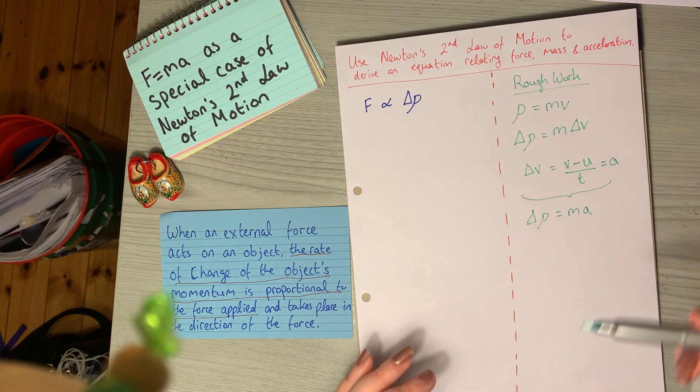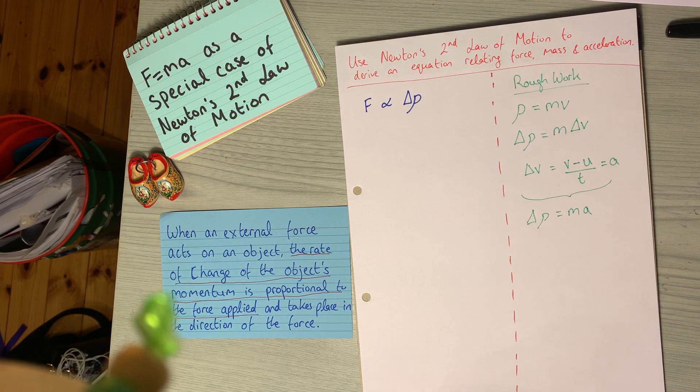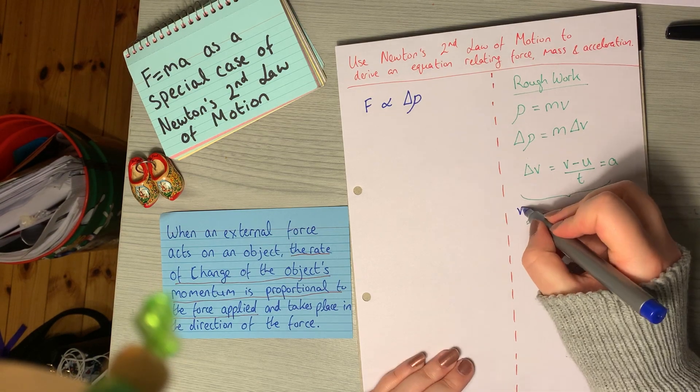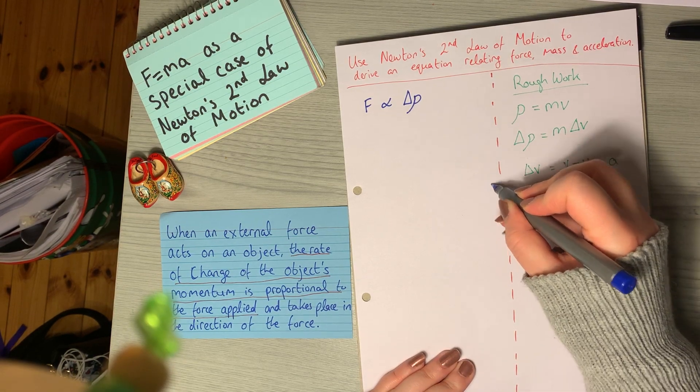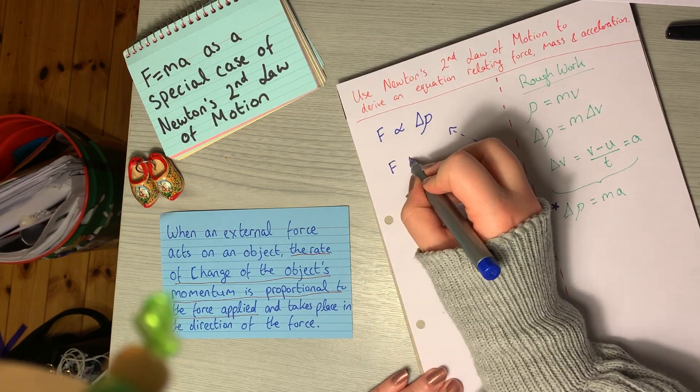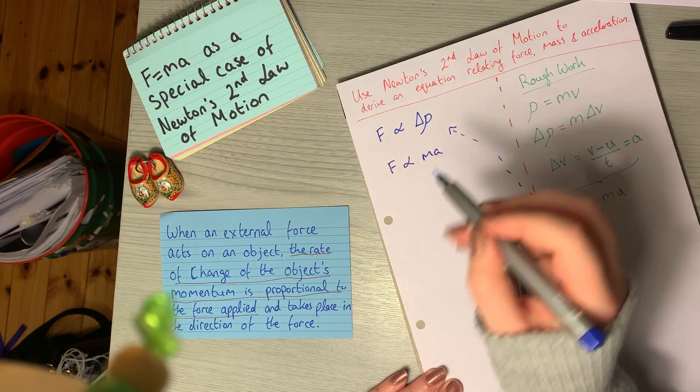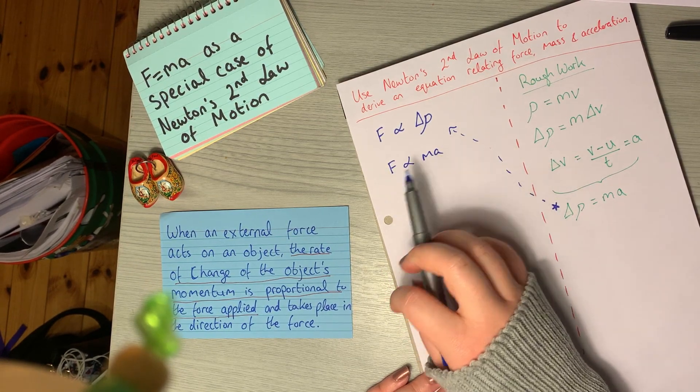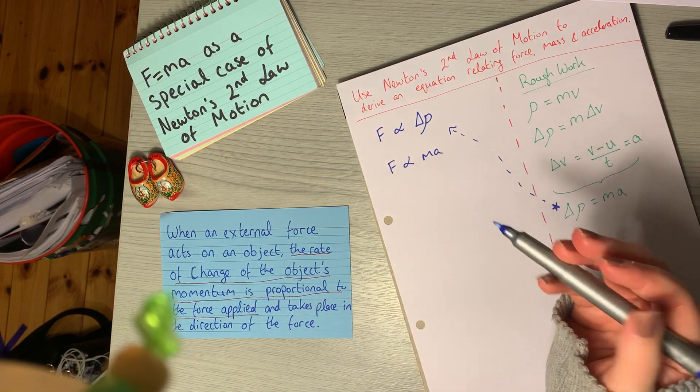In this case, we can write delta rho or the change in momentum is equal to M times A. So the mass of the object times acceleration. What we can do is we can take this back up and we can sub it in here. So now we have F is proportional to MA. We have all our quantities that we need. We just need to show that they're equal to each other.